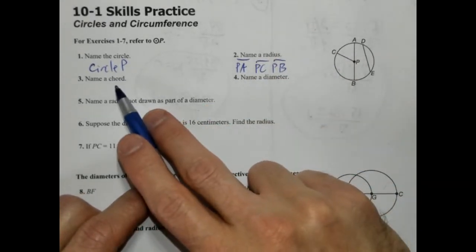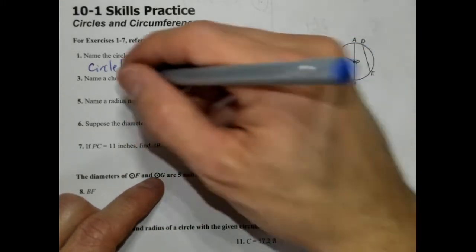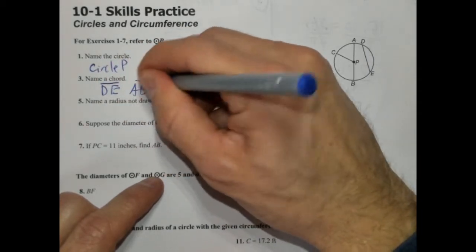Name a chord. A chord is a line segment whose endpoints are on a circle. So we have DE and AB.